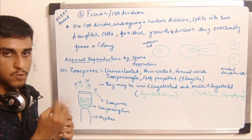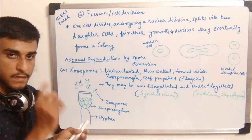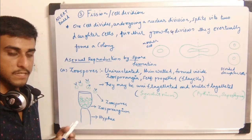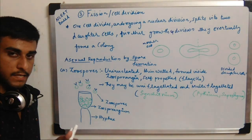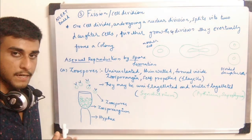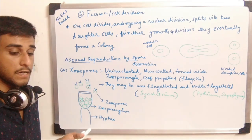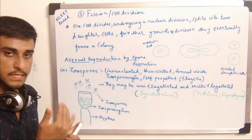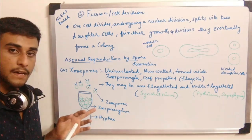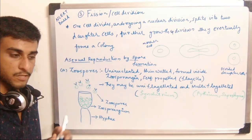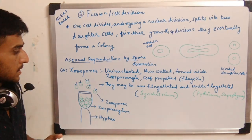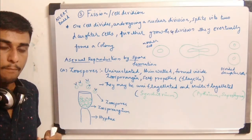Zoospores can be self-propelled in water. Usually zoospores are released into water. How these zoospores find their way, how they are involved in fertilization or germination, we will discuss in detail later. Next we will look at aplanospores and conidia, and also uredospores and teleutospores.